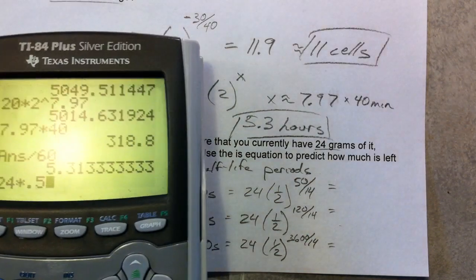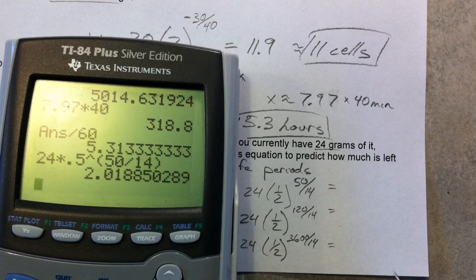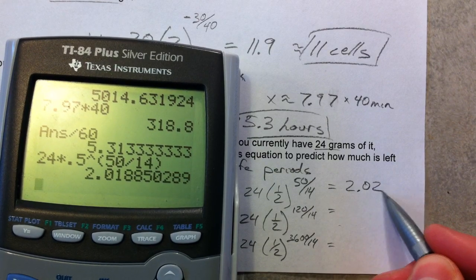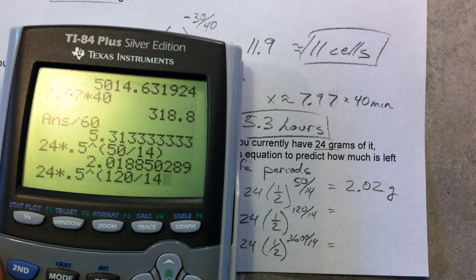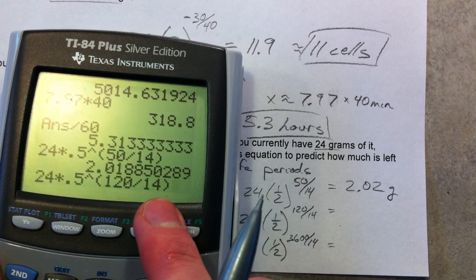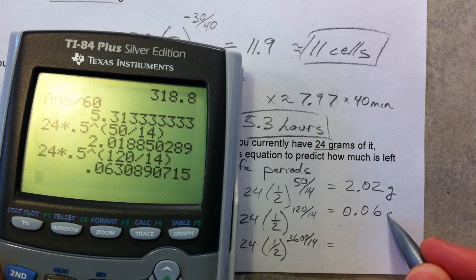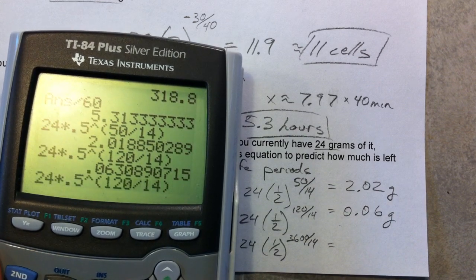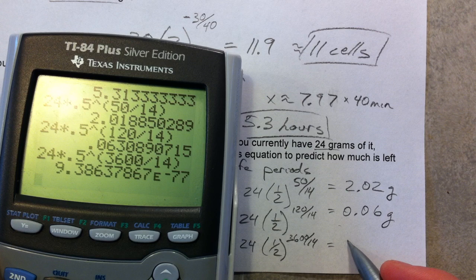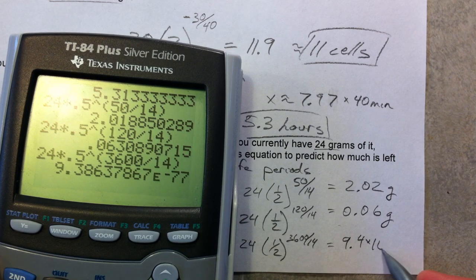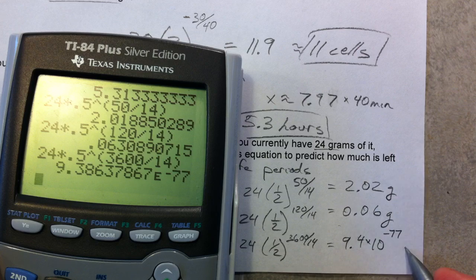I'm just going to type in times 0.5 raised to the 50 divided by 14. Remember we started with 24, now we only have 2.02, and I'm going to say this is in grams. After 120 divided by 14, notice that I'm putting our fraction as an exponent. I want to make sure I divide that before I raise it to the power. Now we only have 0.06 grams left. And now we're going to wait for a whole hour, 3600 divided by 14. 9.4 times 10 to the negative 77th—not much left, essentially 0. We're not going to be able to tell the difference.